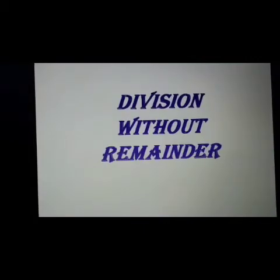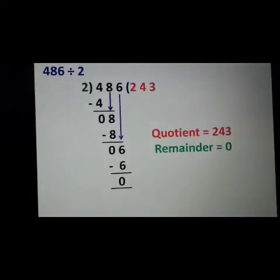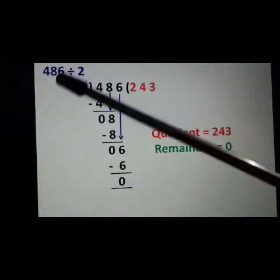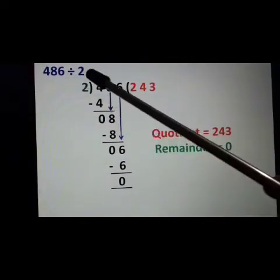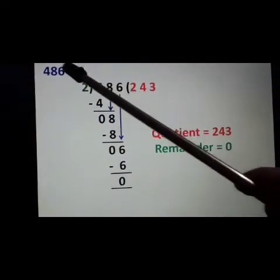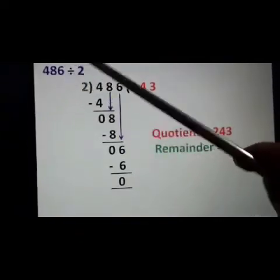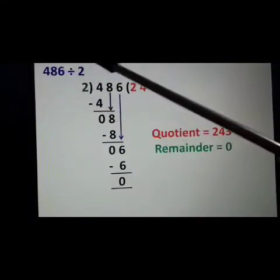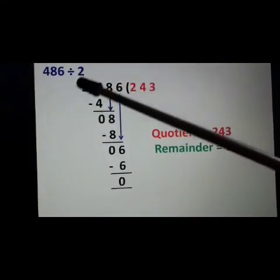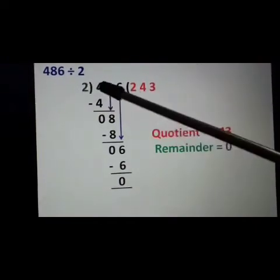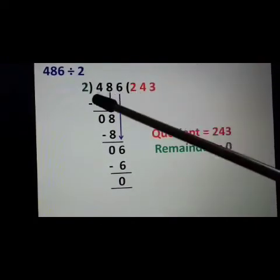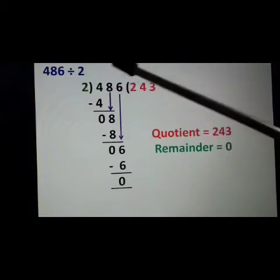Next is division without remainder. Let's take one example. Here we have to divide 486 by 2. 486 is the dividend and 2 is the divisor.